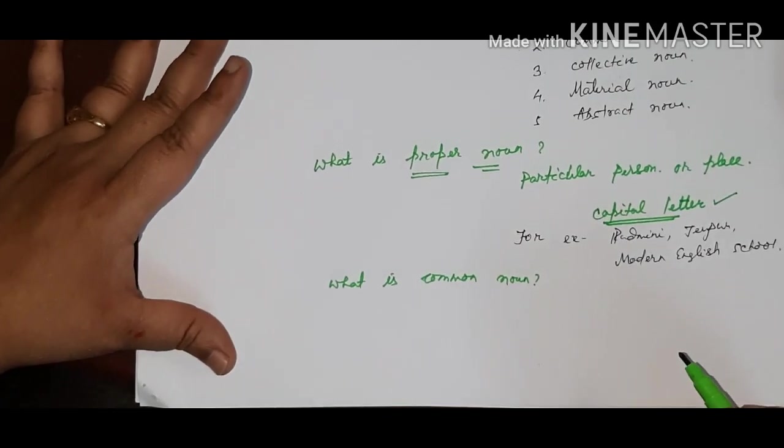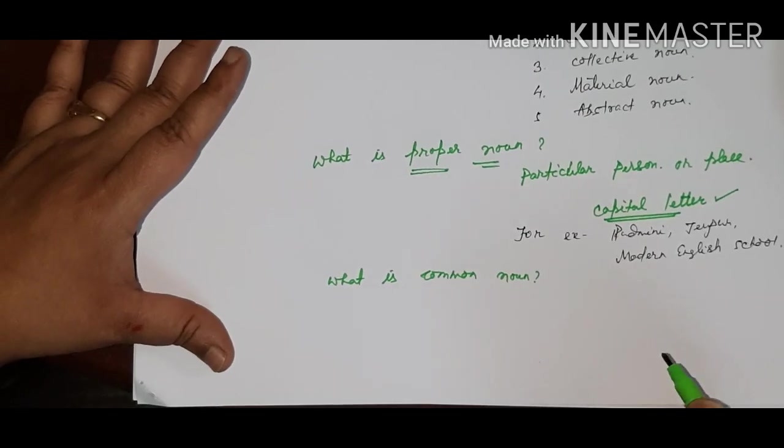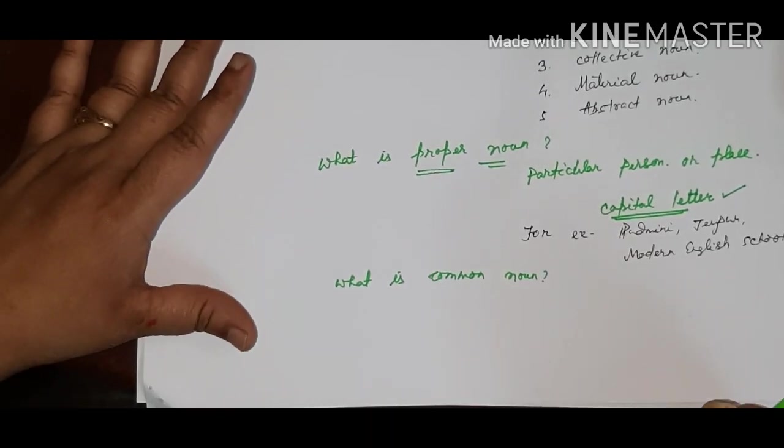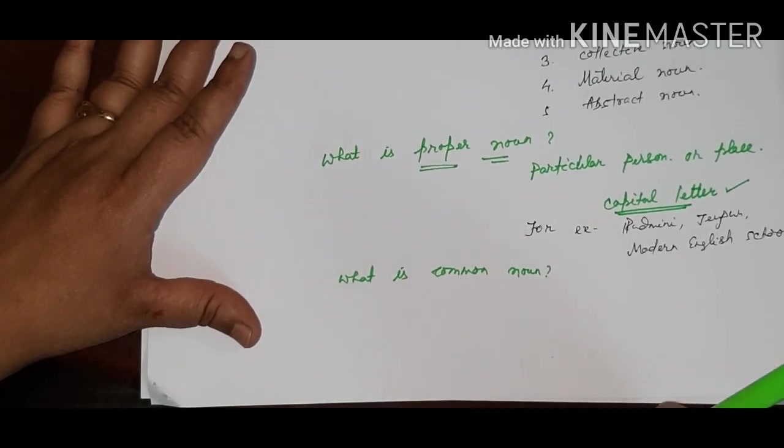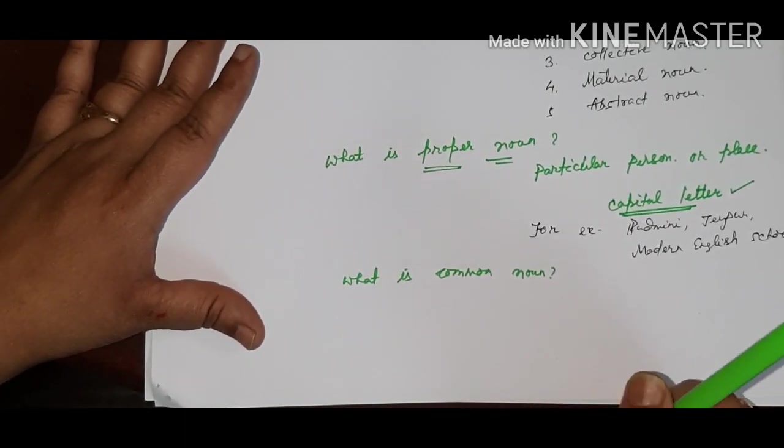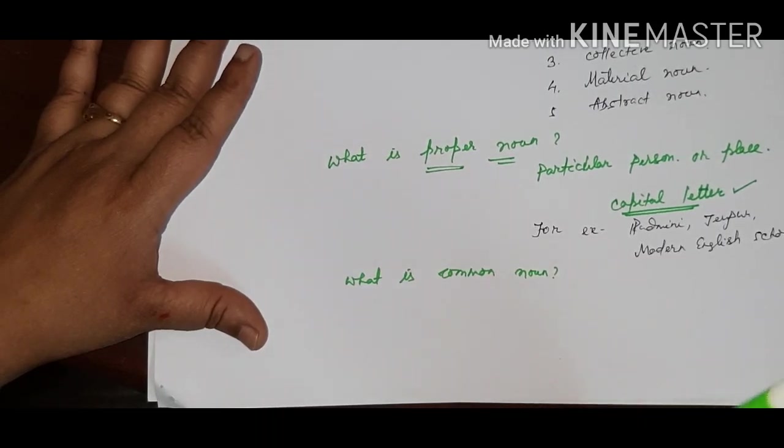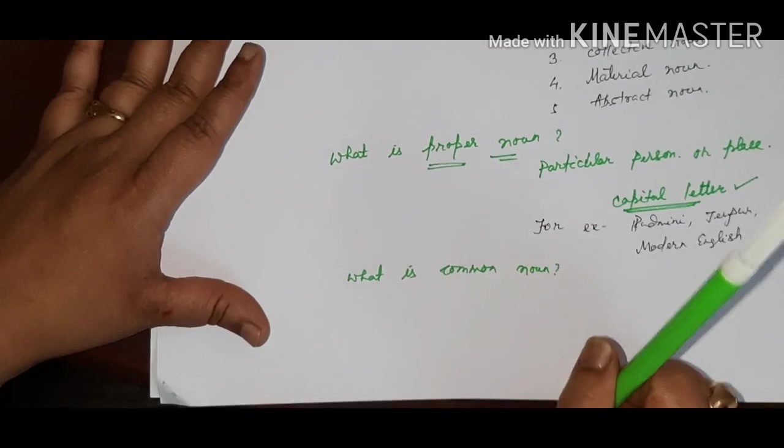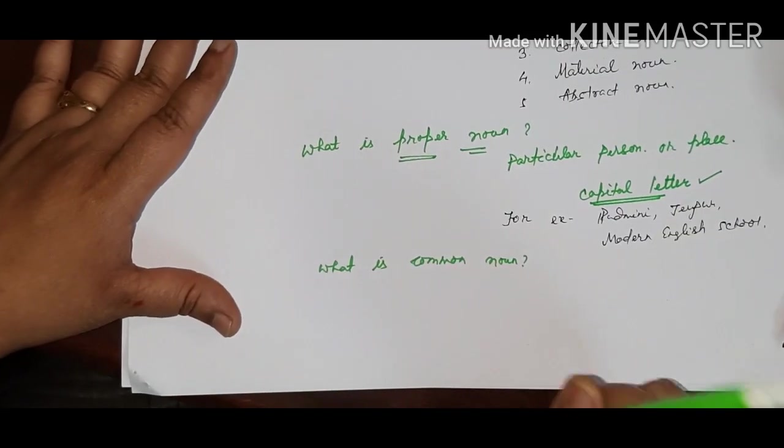Common nouns are naming words that are common to people, places, things, and animals. Remember, children, common nouns do not define any particular person, place, or thing. They are general names. So they are not capitalized unless they begin a sentence. For example,